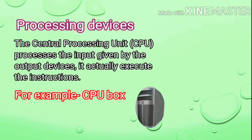Processing devices: the Central Processing Unit, i.e. CPU, processes the input given by the input devices. It actually executes the instructions. For example, the CPU box. Whatever is typed through the keyboard or mouse goes to the CPU, which processes it and sends the result to the monitor.